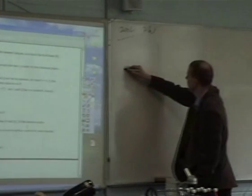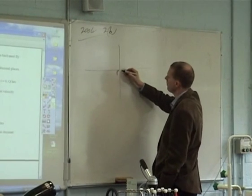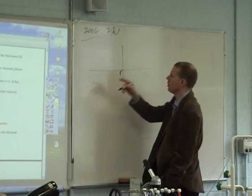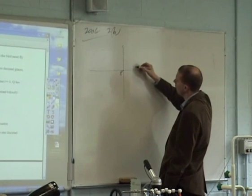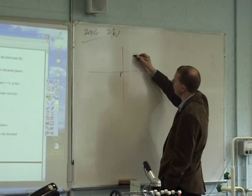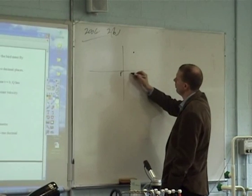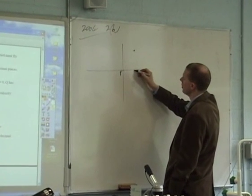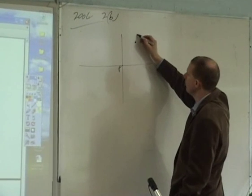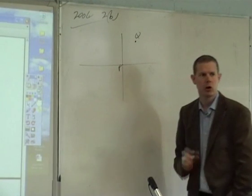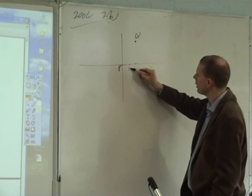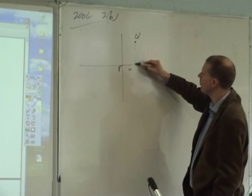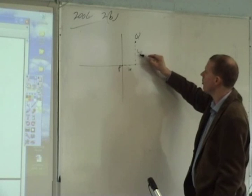Sometimes we're so familiar with dealing with vectors like 4i minus 3j that we never take a step back to ask what does it actually mean. So if Q has position vector 20i plus 40j relative to P, on my axis, if I put P here, Q has position vector 20i plus 40j. So I go 20 meters in the i direction, up 40 meters there, and that's where Q is.